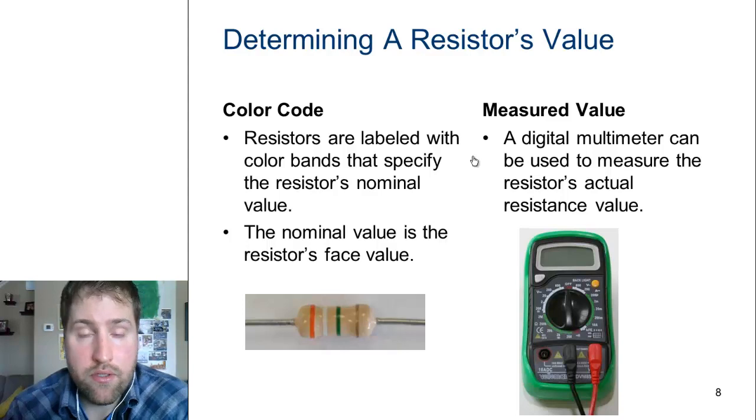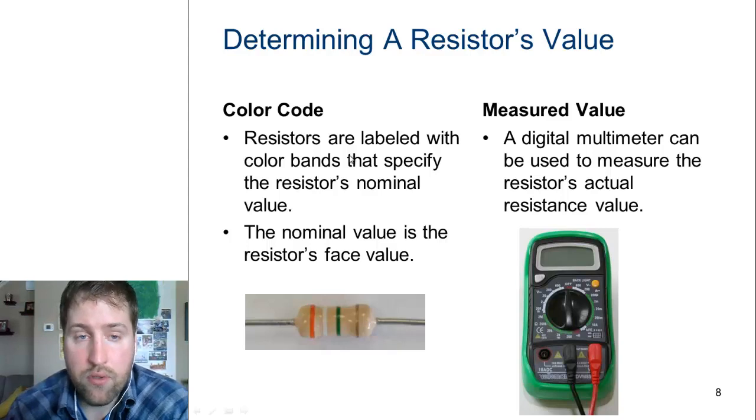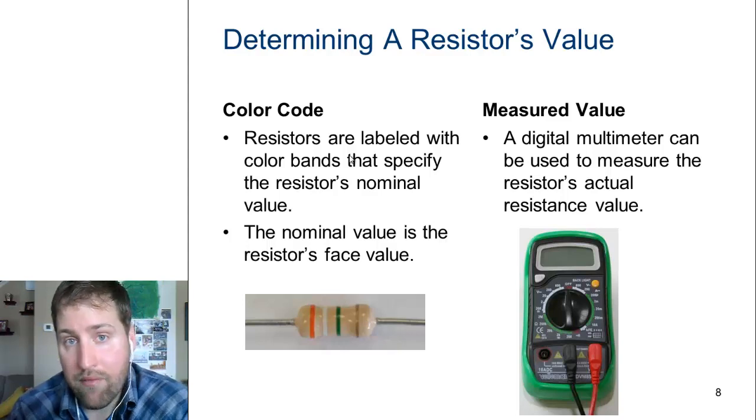Now when we talk about resistors, there's a very simple and easy way to determine the value of a resistor. It's this color code system mentioned on the left side, or we can also always use a multimeter to measure the resistance of a resistor.